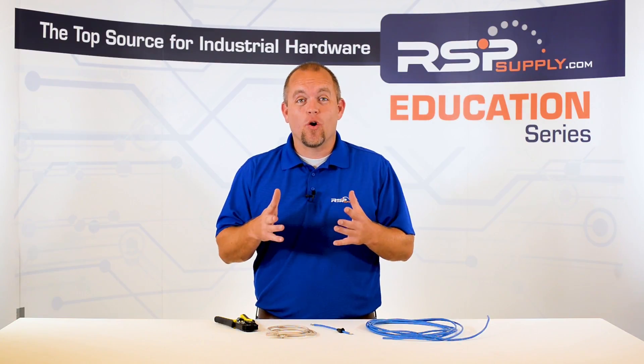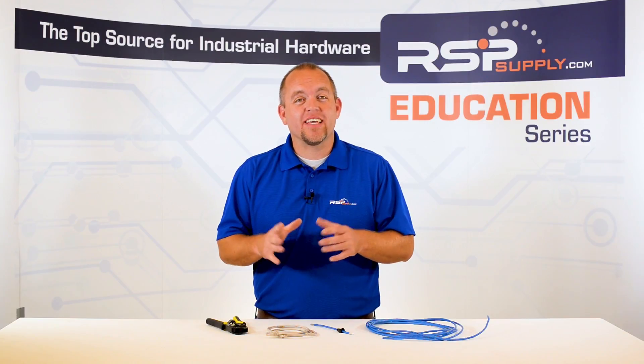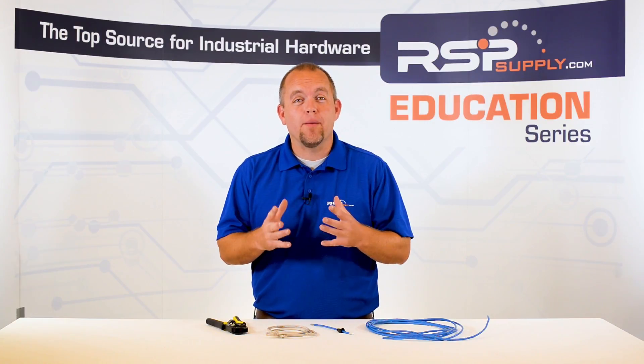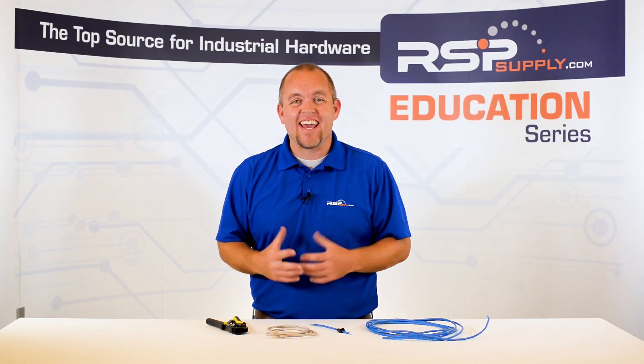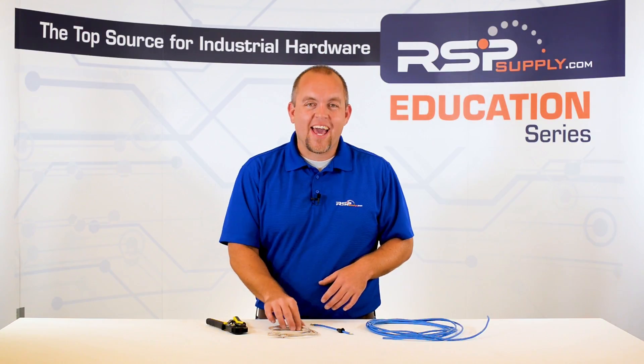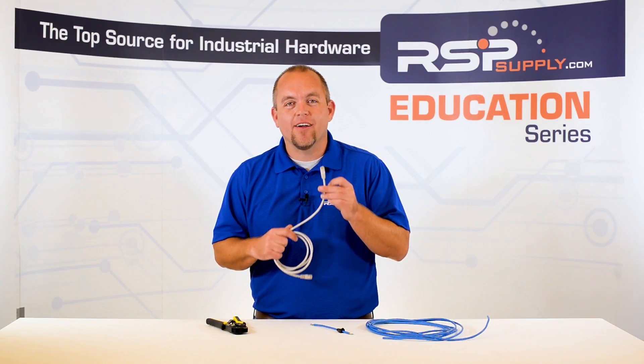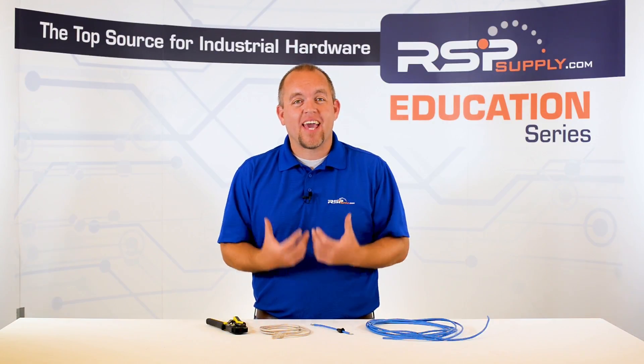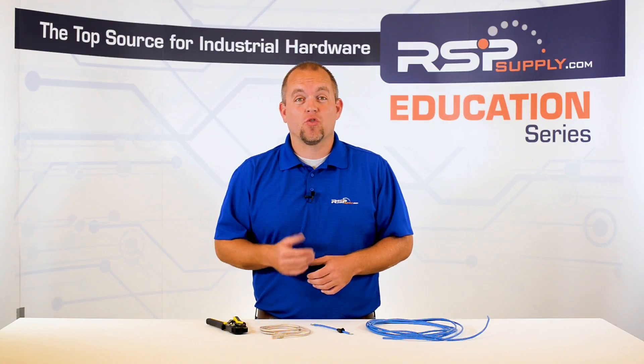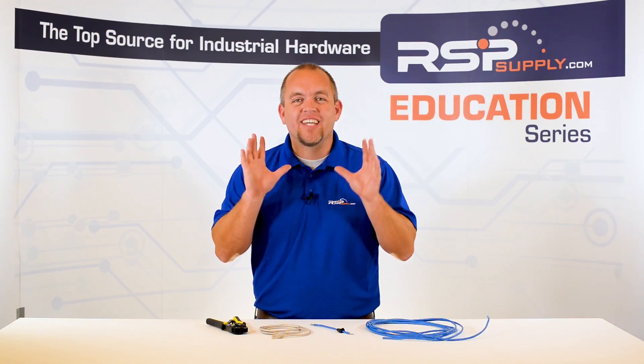In today's video we are going to talk about network cables. More specifically I want to talk about how to crimp one of the most common types of network cables that we see today: CAT5 or CAT6 cables using an RJ45 style connector. It is important to understand that these types of cables can be purchased with connectors already attached on the cable in almost any length.